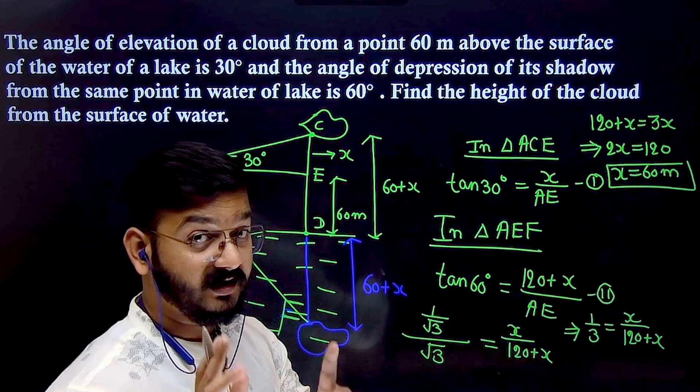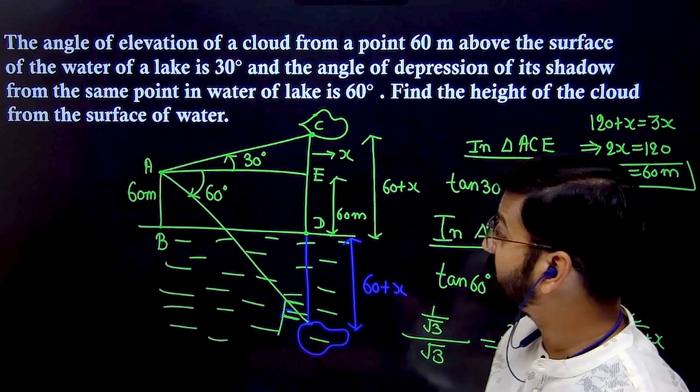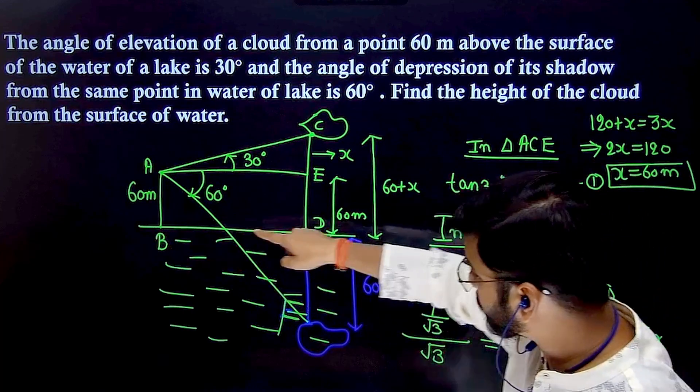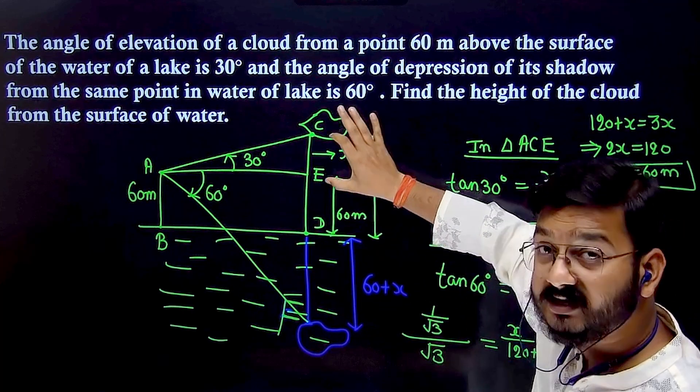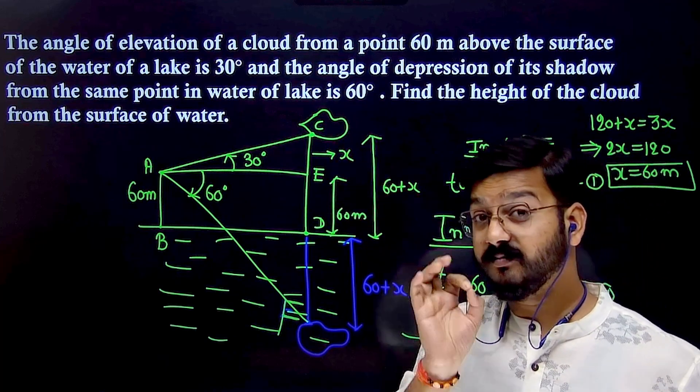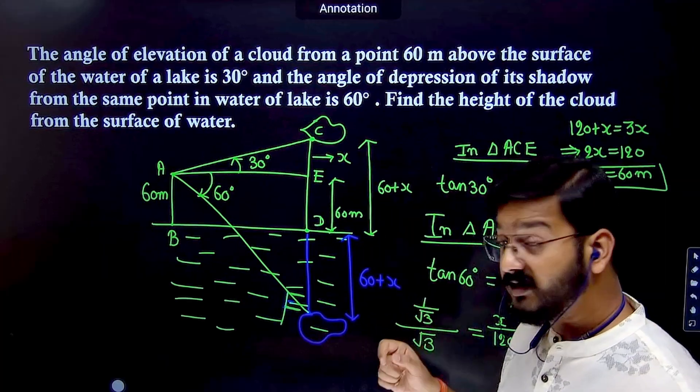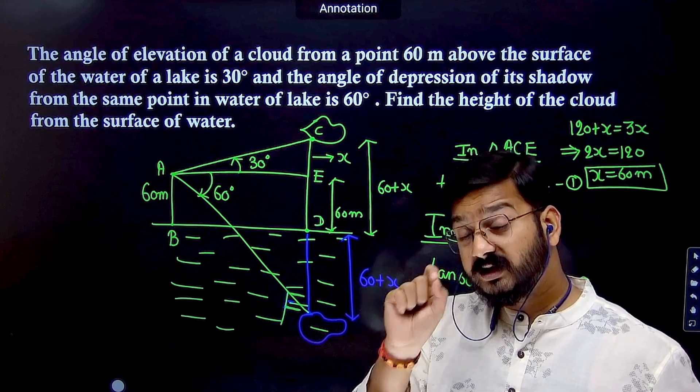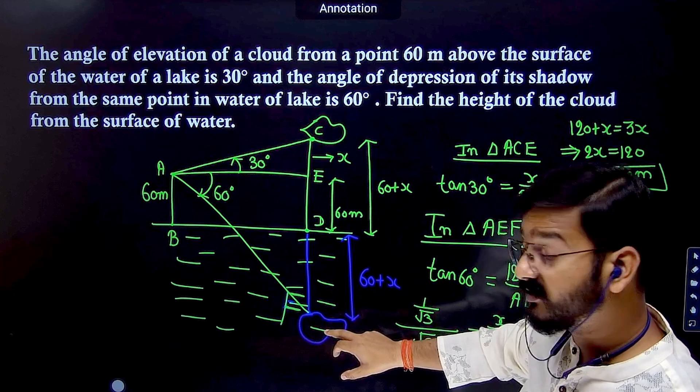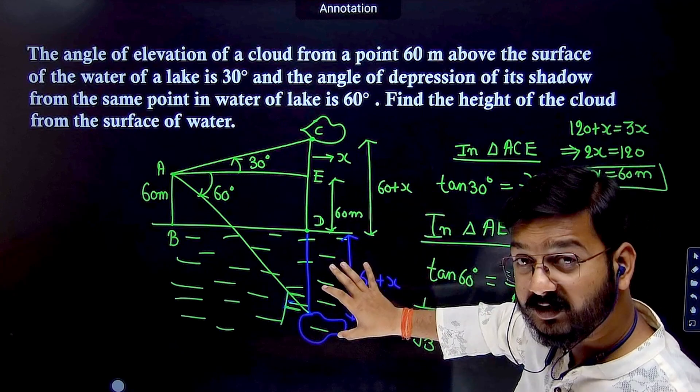This is not our final answer. Read the question carefully: find the height of the cloud from the surface of the water. That is 60 + X = 120 meters. X is not the final answer. If they ask for the distance between the cloud and its reflection, that would be 120 + 120 = 240 meters.